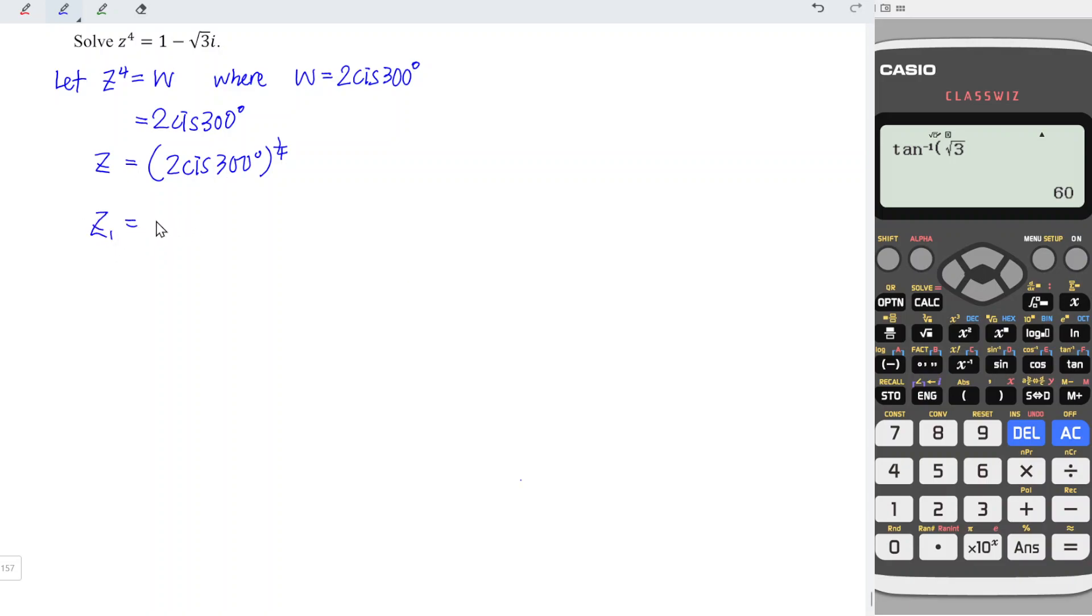From here, we should have the first root is equal to 2 to the power of 1 over 4. Since 300 degrees should be divided by 4, so we have 300 divided by 4 is equal to 75 degrees. And this is in the form of polar, and we have to convert to rectangular form. With the calculator, we take 2 to the power of 1 over 4, and we should first press cos for the real part, with the angle 75 degrees, and this is equal to 0.308, rounded to 3 decimal places. And for the imaginary part, simply change cos to sin. Press equal, we obtain positive 1.149, rounded to the nearest 3 decimal places.